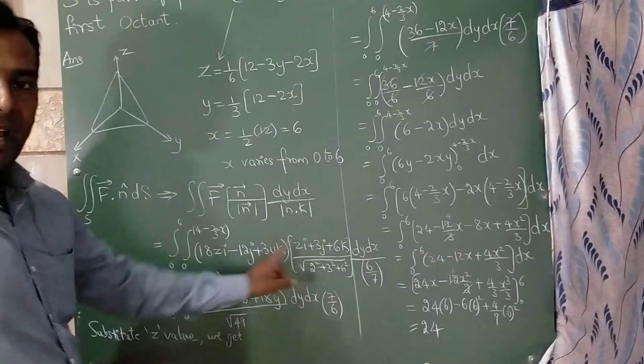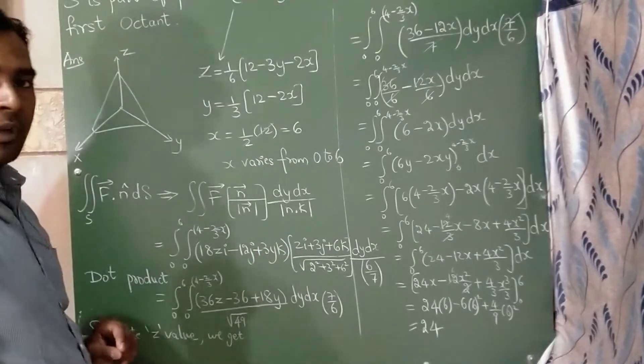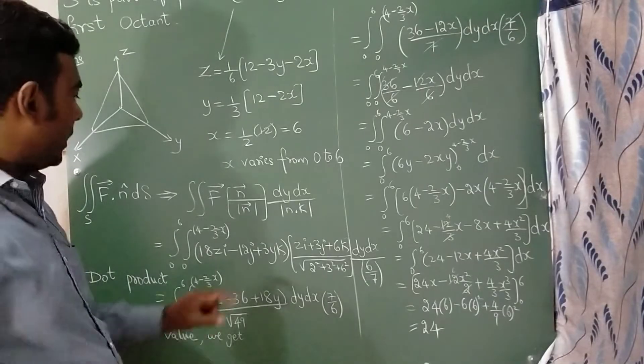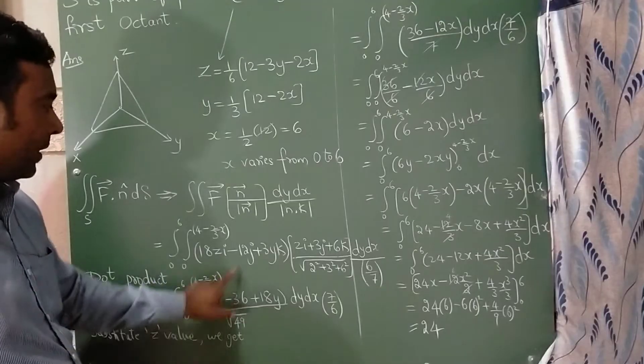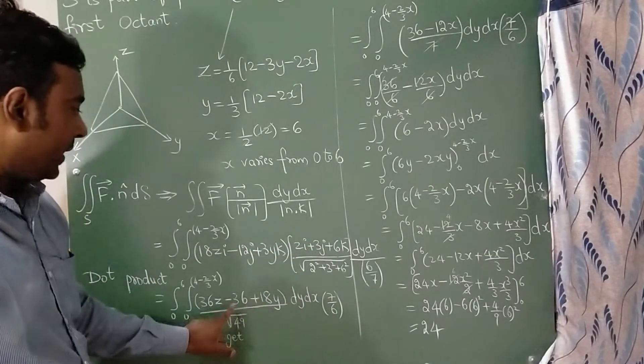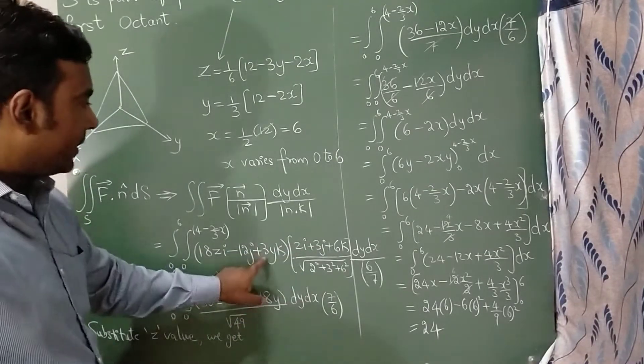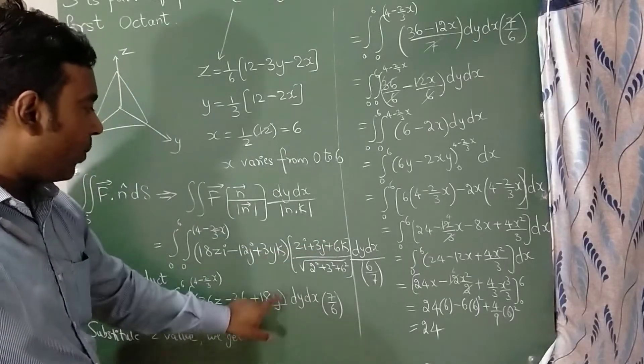Now I am going to apply dot product. Now in the lower classes you have studied dot product means 18 times 2 is 36z, minus 12 into 3 is minus 36, 3 times 6 is 18y.